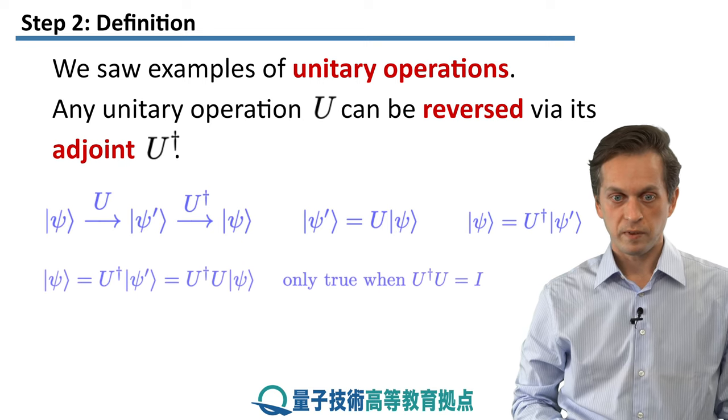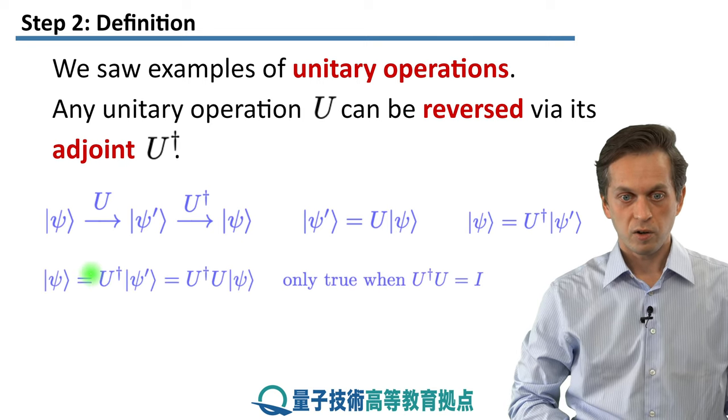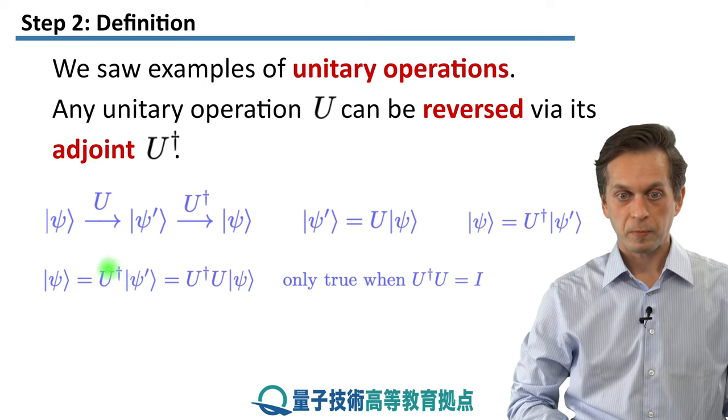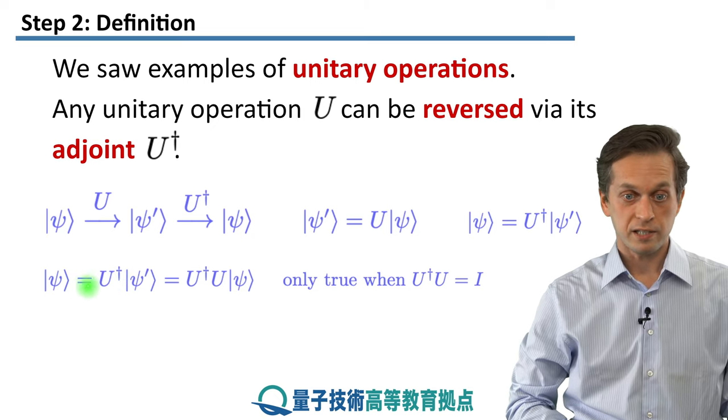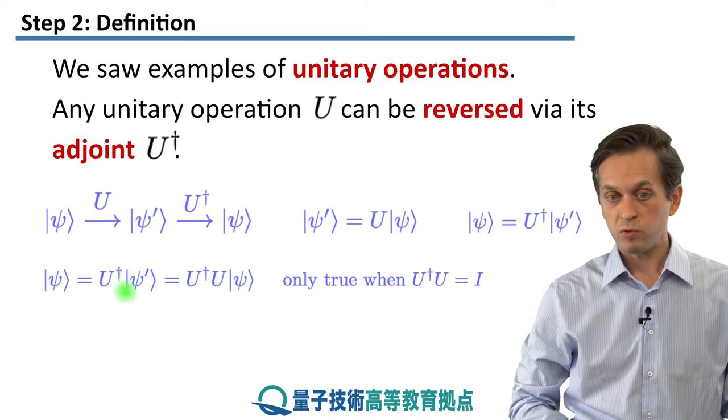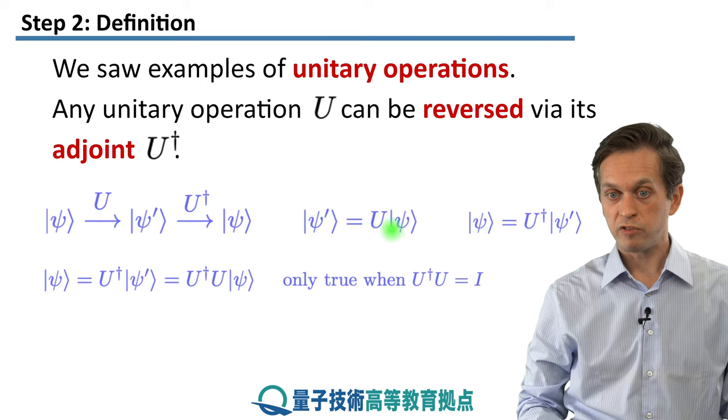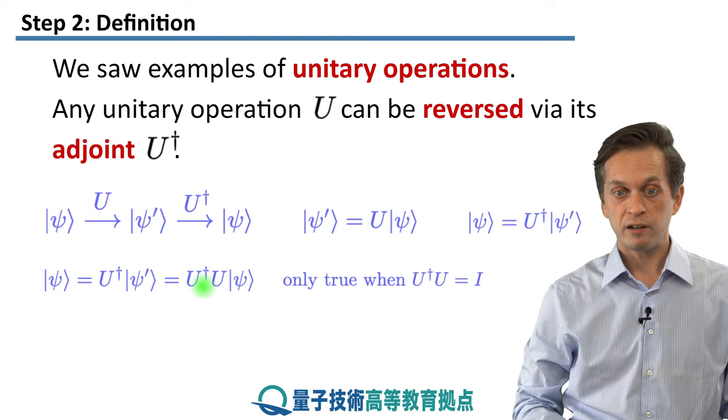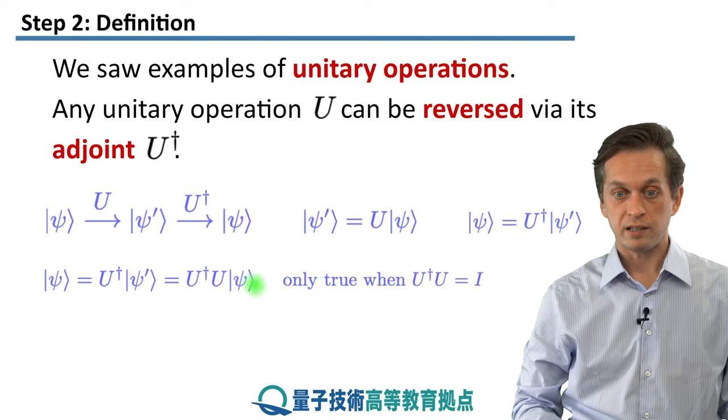So let's put these two together. We start with our input state ψ, which is the same as applying the adjoint to the state ψ'. But then again, we know the expression for ψ' from over here, so we can just substitute it in. And we get U† times U times the state ψ.